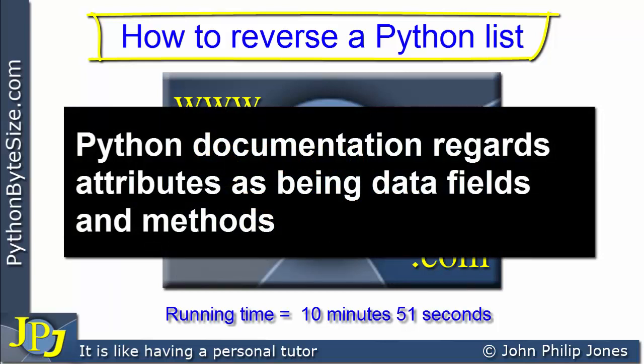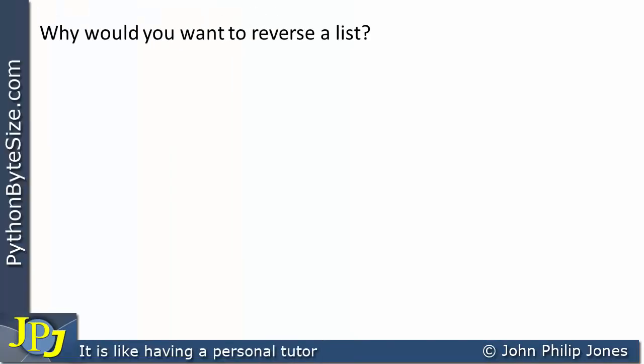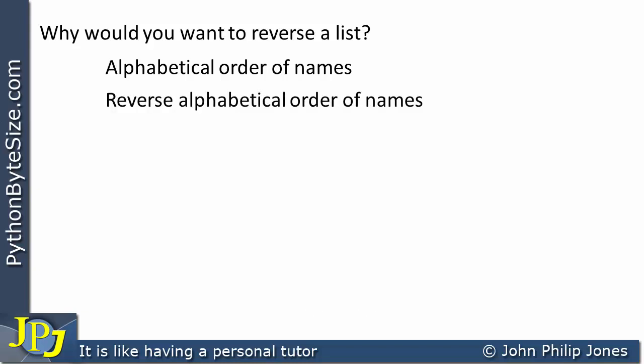One of the attributes we will see will be the method reverse. Why would you want to reverse a list? Let's take a situation whereby you want to look at the list of pupils in a class, and you have an alphabetical order of names. You build a graphical user interface and the list holds the names which are transferred to the GUI for you to view.